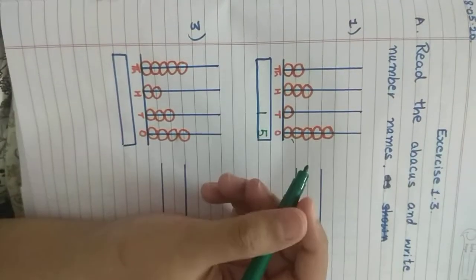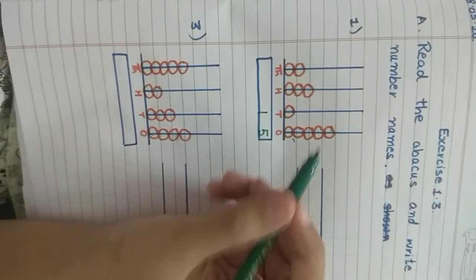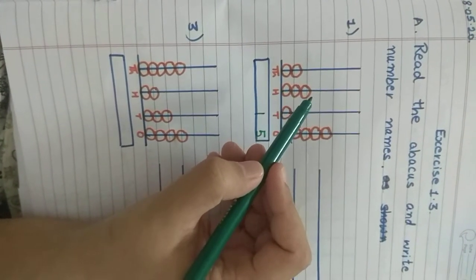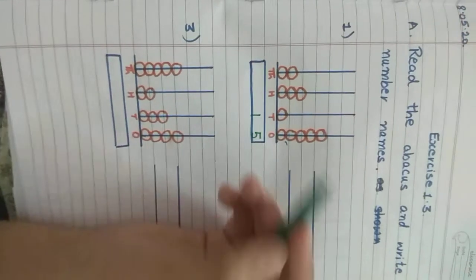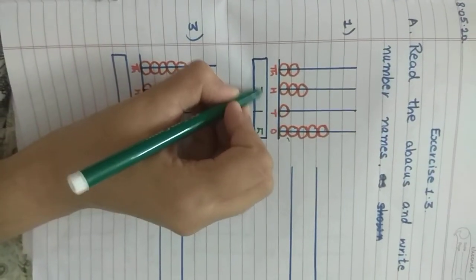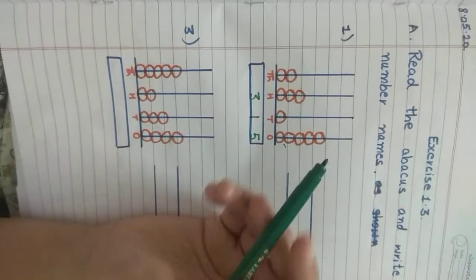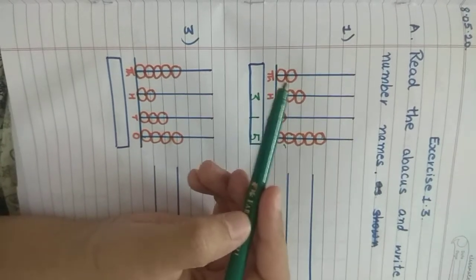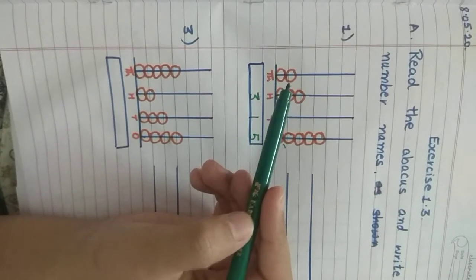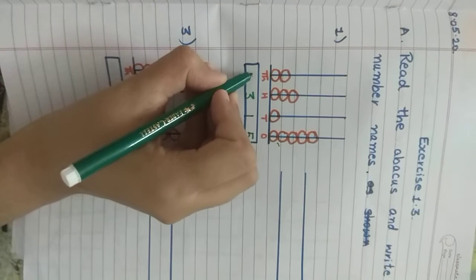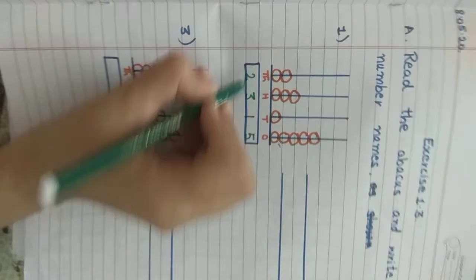How many beads of 100s do you see? 1, 2, 3. So basically you have 3 beads of 100s. How many beads of 1000s do you see? 1, 2. So how many beads are there? 2. So you have 2 thousands.